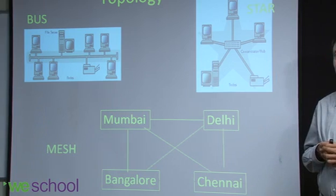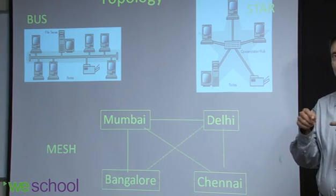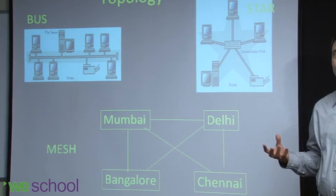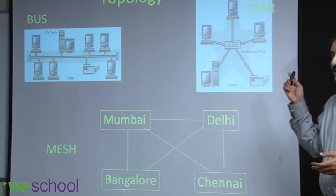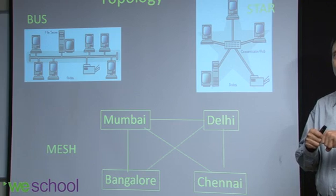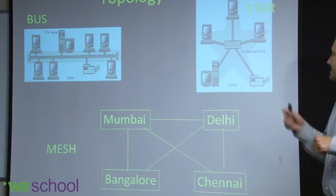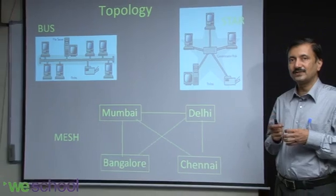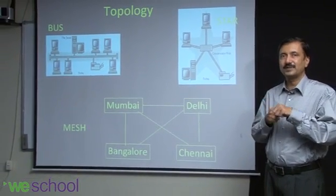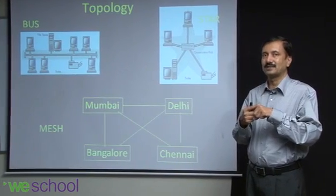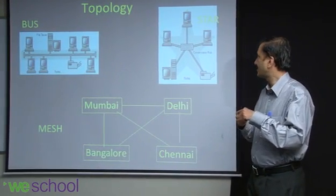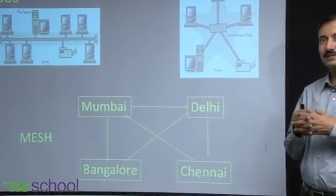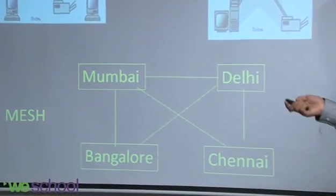The star topology is essentially one central server to which you have point-to-point connections with each end node or terminal. The star acts as the main controller of the entire network - the central machine is really the controller. The advantage is direct communication from each node to the server, but unfortunately if the server fails, the entire network collapses.